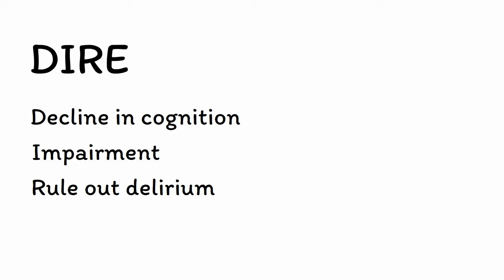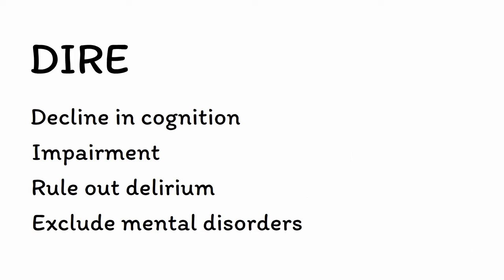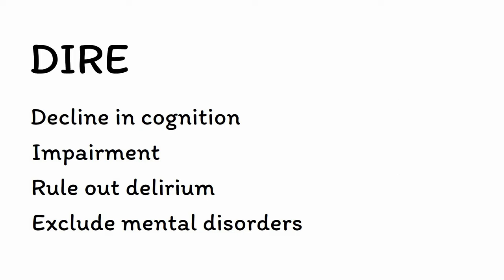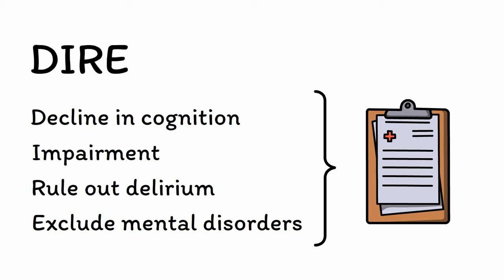Finally, you need to make sure to exclude other psychiatric conditions like depression and schizophrenia as possible causes. These disorders can sometimes mimic dementia as well, especially in the elderly where symptoms like impaired concentration or lack of motivation can easily be mistaken for dementia. Provided you have done all these things, a diagnosis of dementia is appropriate.